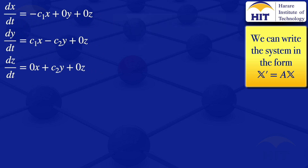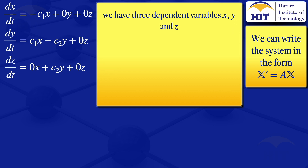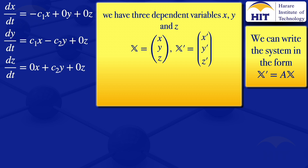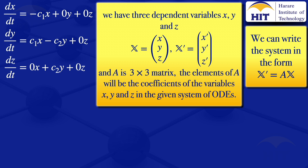We have three dependent variables X, Y, and Z. So our column matrix X is X, Y, Z, and X prime is the column matrix of their derivatives X prime, Y prime, Z prime. Since we have three variables, matrix A will be a 3 by 3 matrix, and its elements will be the coefficients of X, Y, Z in the system of ODEs.